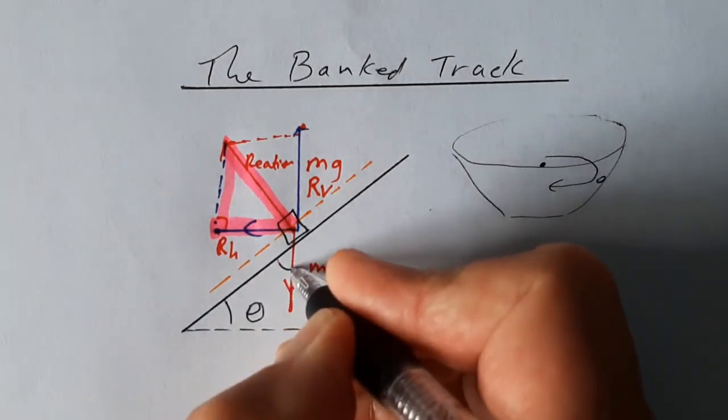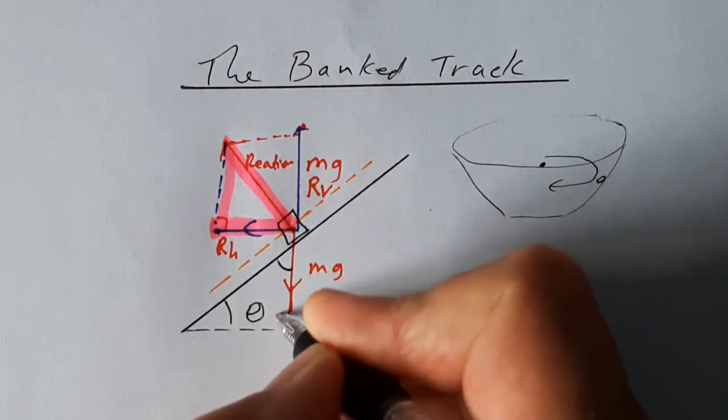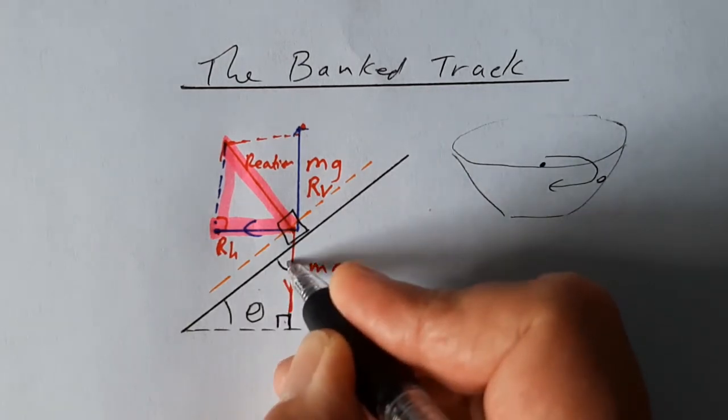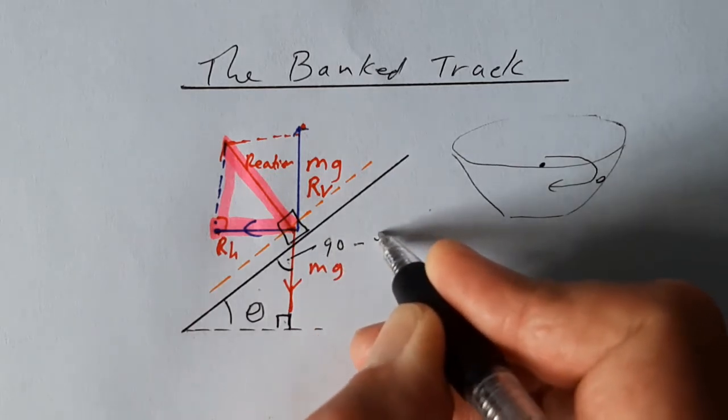That angle there, because it's in a right angle triangle, that's 90 degrees. So if that's 90, that plus that must be 90. So that one there is 90 minus theta.